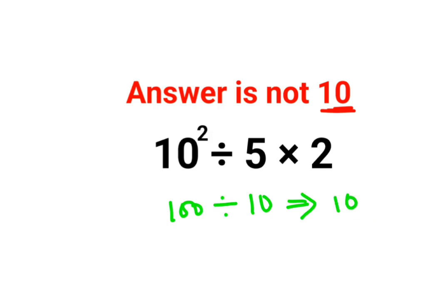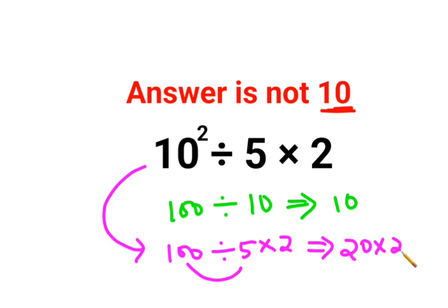And then there were other set of people who thought we should do this way. 100 divided by 5 multiplied by 2. So first they did this. So they got it as 100 divided by 5 is 20 multiplied by 2 that answer is 40.